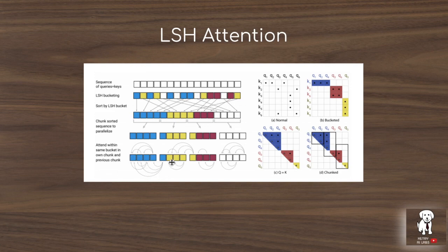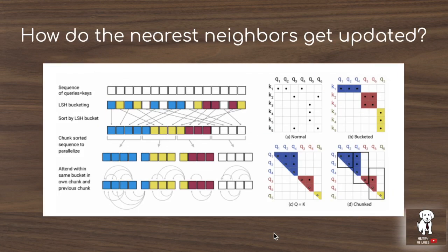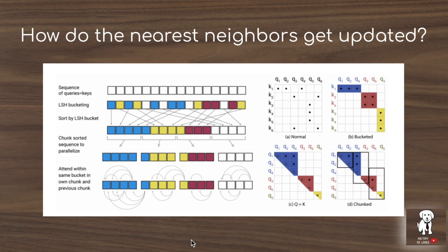Tying this back to LSH attention: keys are grouped by LSH bucketing based on similarity with queries, chunked, and attention is computed on the similar keys. You attend on both the current bucket and the previous bucket — the blue being the most similar and the next tier mixing in second-most-similar keys. Regarding a question about randomly initialized weight matrices for queries and keys causing permanent random similarity assignments: the weight matrix that assigns inputs into the similarity space has partial derivatives that will perturb it to become less similar over training.